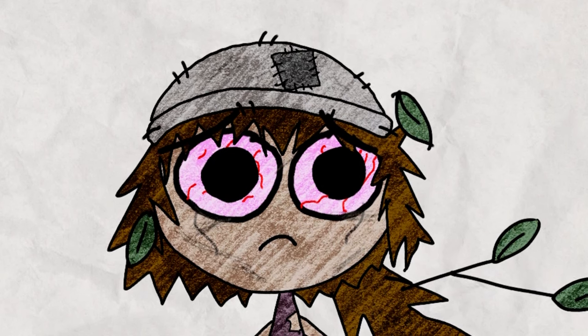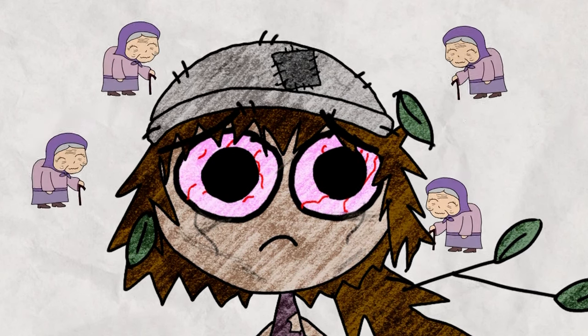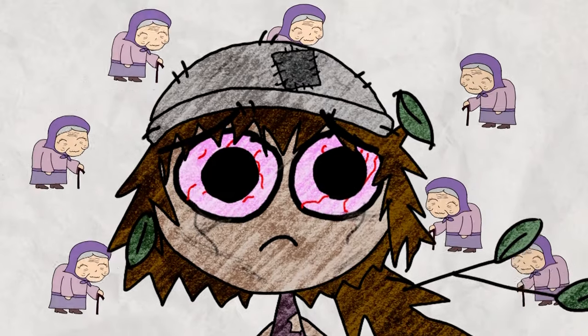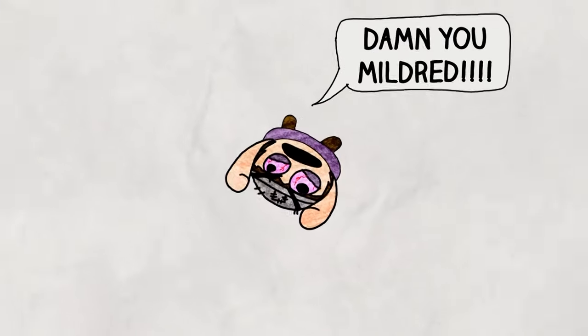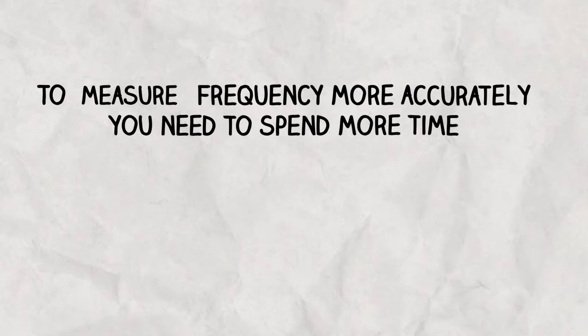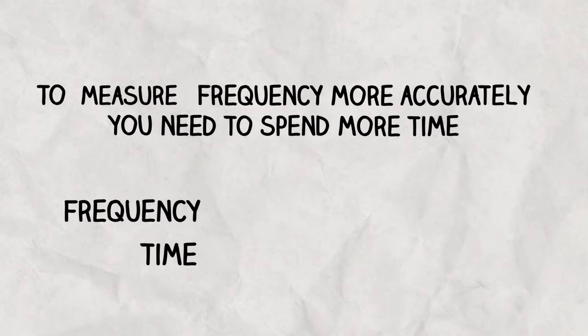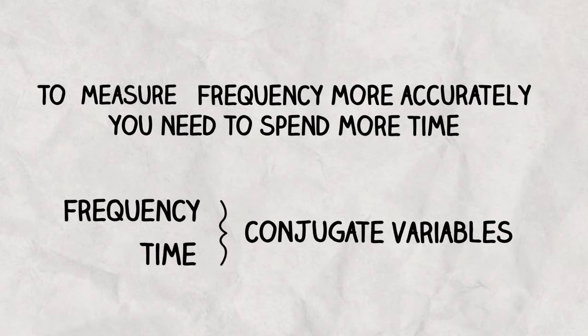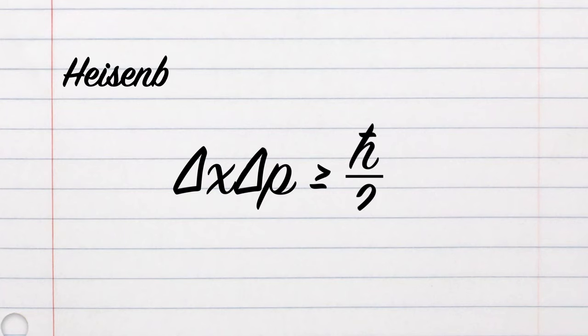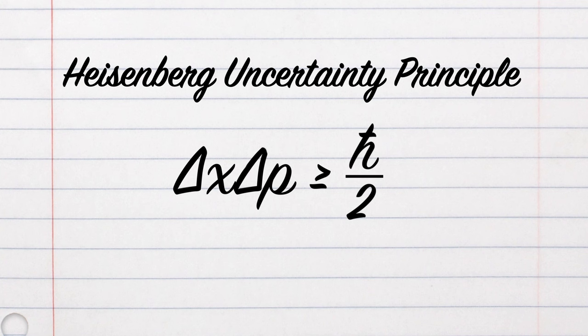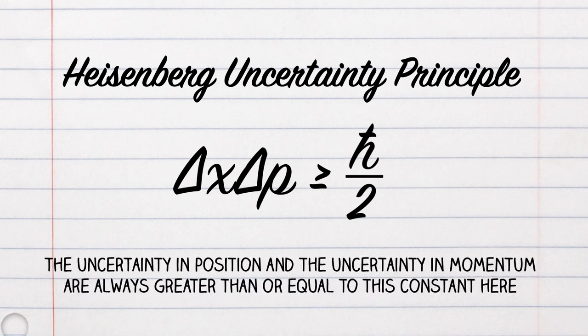Obviously, you don't have an infinite amount of time. So the frequency of Mildred's market trips can never be known to 100% accuracy. There's this trade-off between knowing the frequency and spending time. This is a version of the uncertainty principle, and variables that have this trade-off relationship are called conjugate variables. Another more well-known pair of conjugate variables are position and momentum. This is one version of the Heisenberg uncertainty principle, and it states that the uncertainty in position and the uncertainty in momentum are always greater than or equal to this constant here. Let's talk about the intuition.